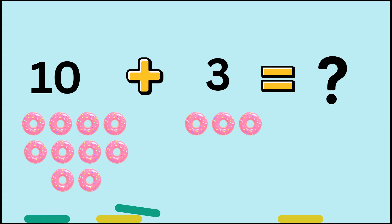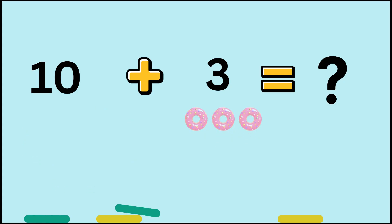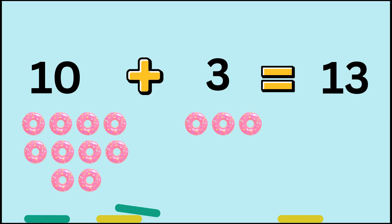Next one. 10 donuts plus 3 donuts equals how many donuts? Hmm. 10 is the bigger number. 11, 12, 13. Wow! It's the same answer as before. 10 plus 3 is 13.